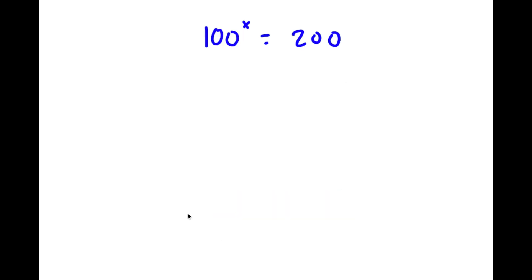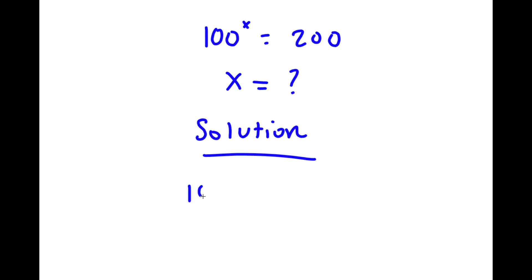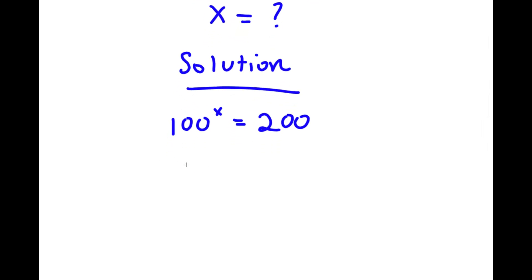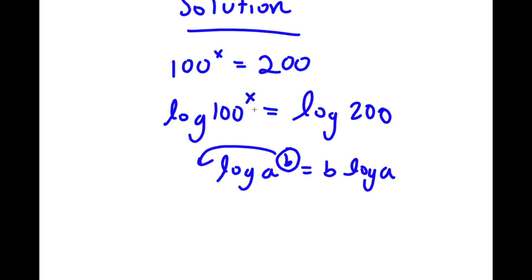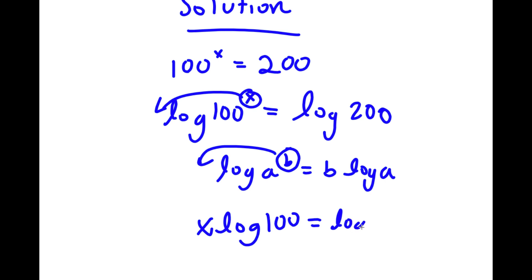Alright, so in this problem I have 100 to the power of x is equal to 200. I'm going to find the value of x here. For my solution, I first start with 100 to the power of x is equal to 200. Now I'm going to take the log on both sides, so I have log of 100 to the power of x is equal to log 200.